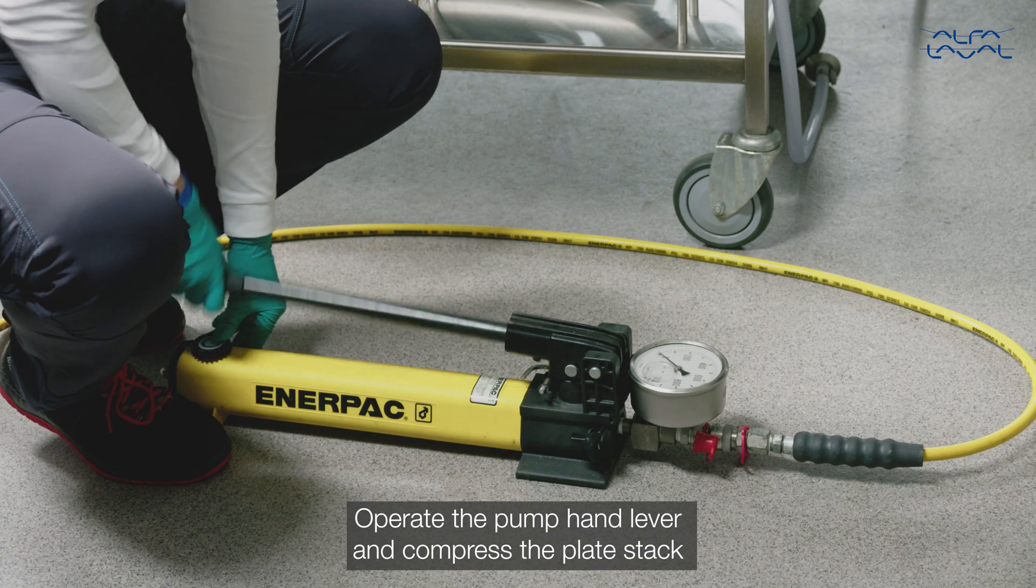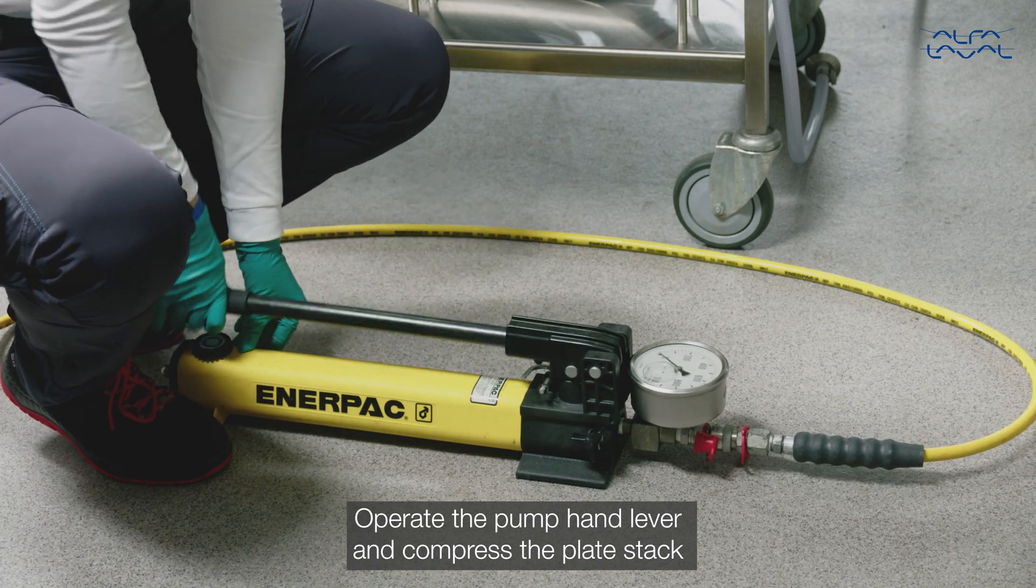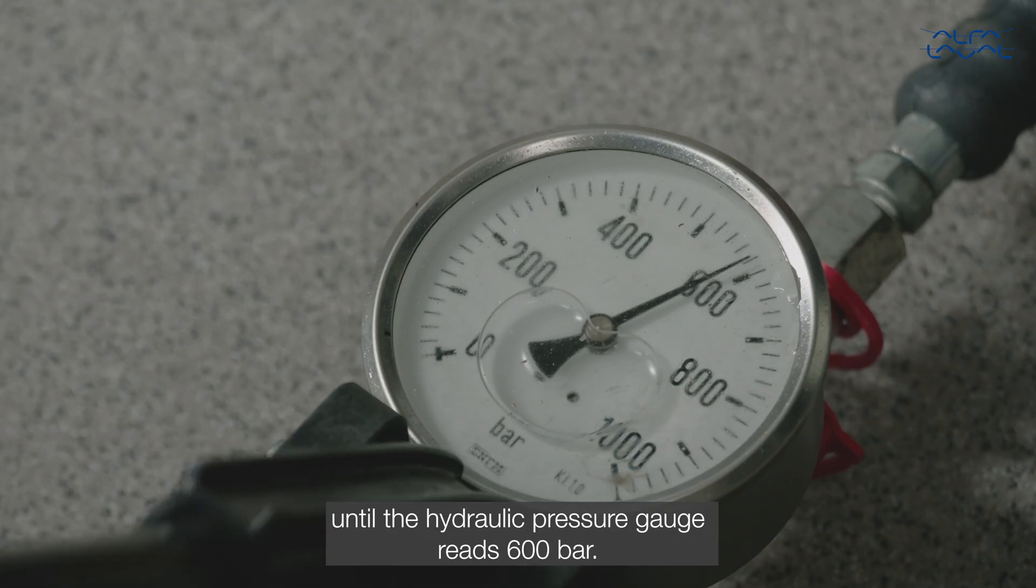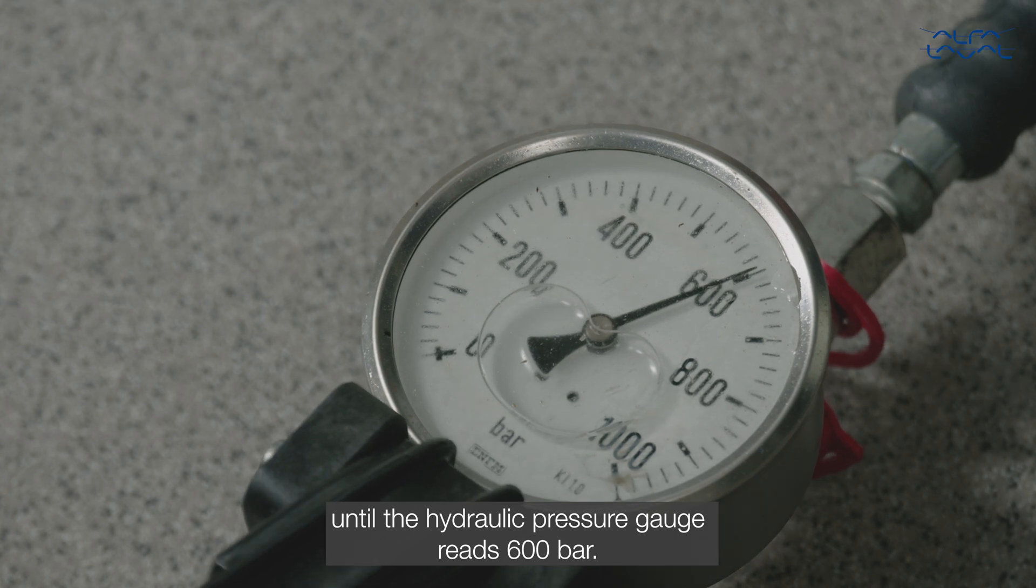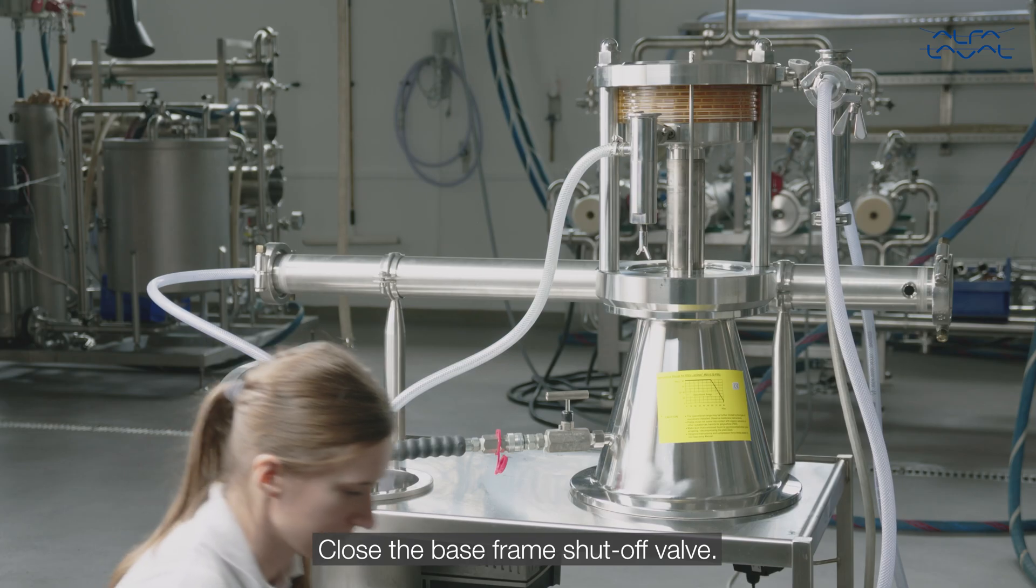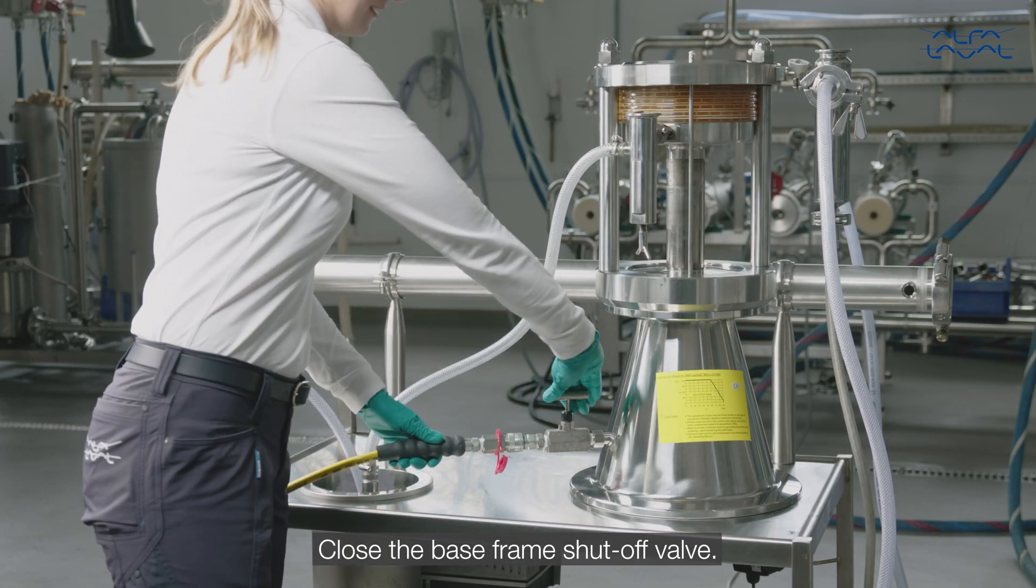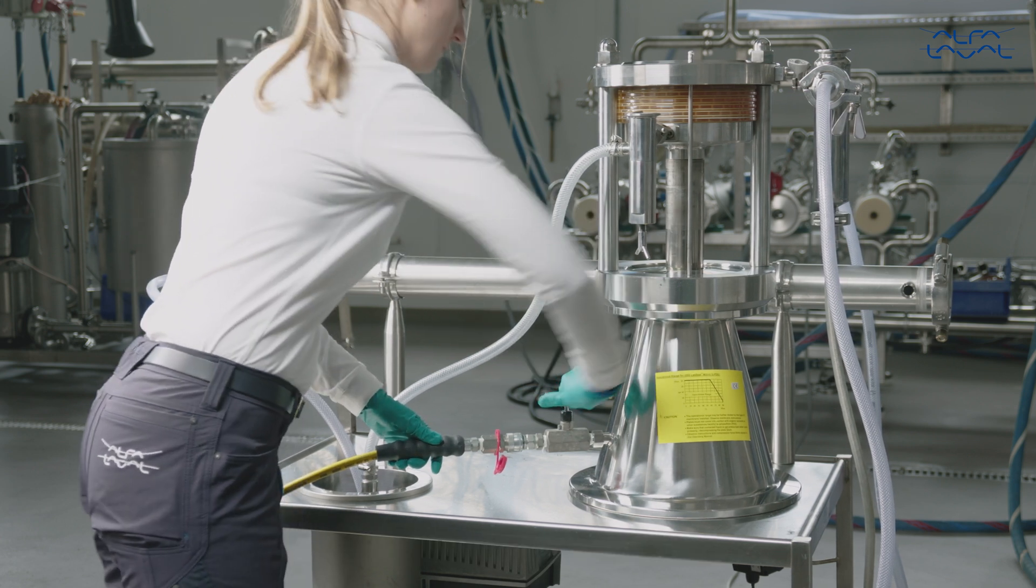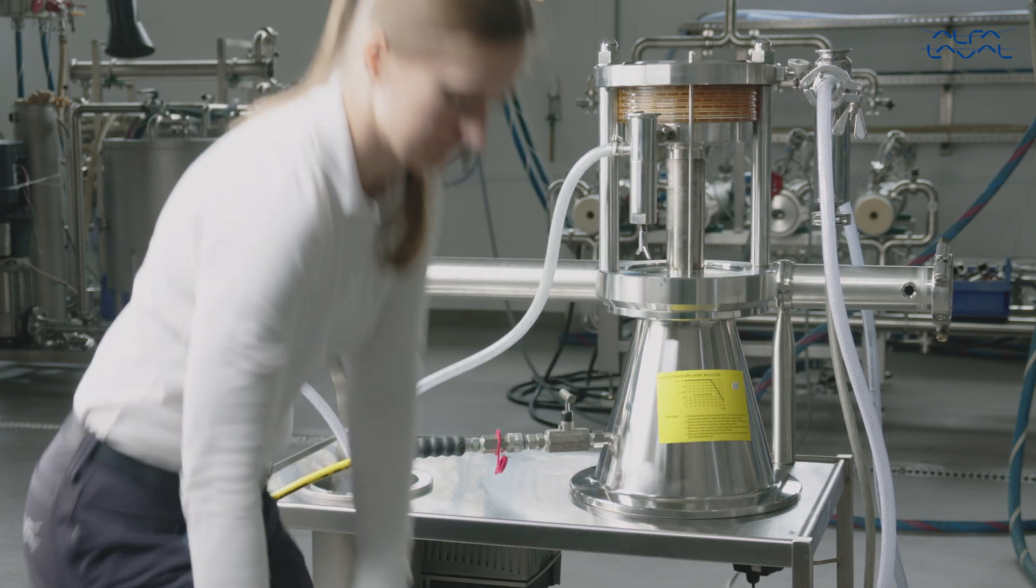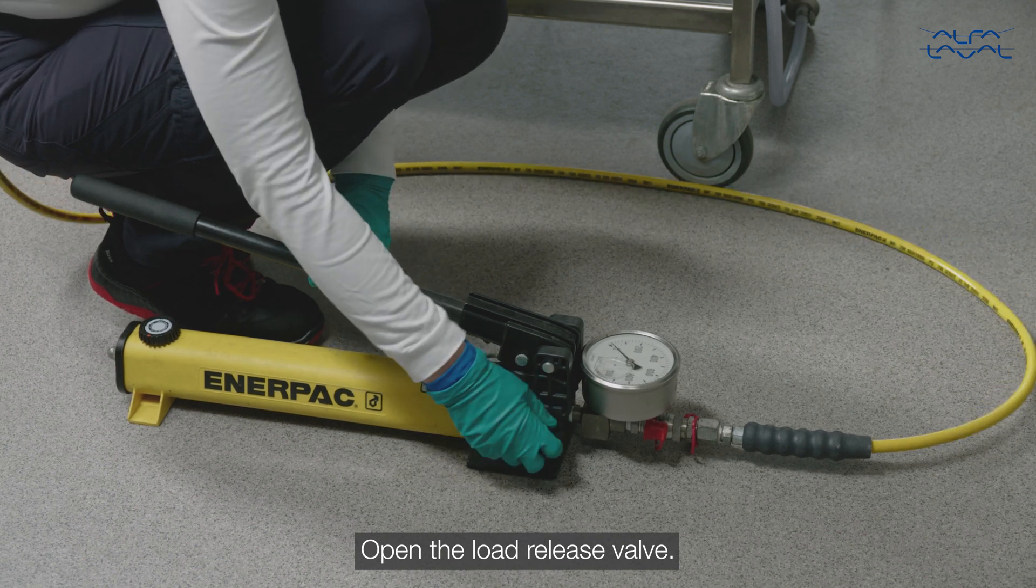Operate the pump hand lever and compress the plate stack until the hydraulic pressure gauge reads 600 bar. Close the base frame shutoff valve. Open the load release valve.